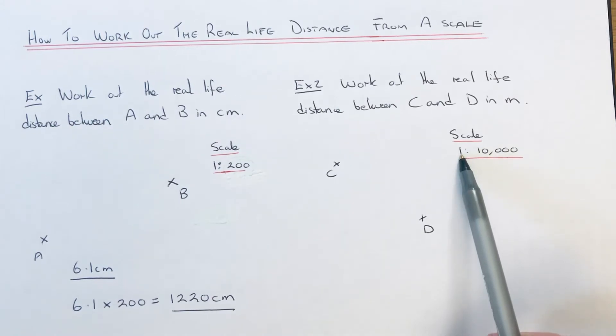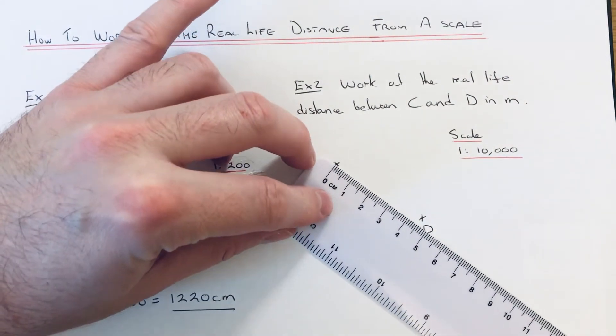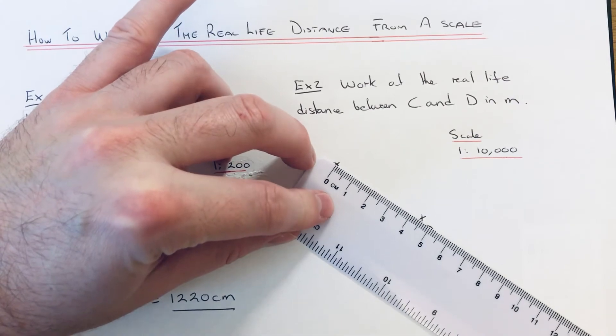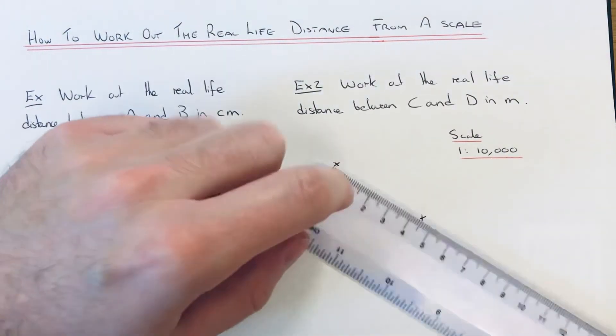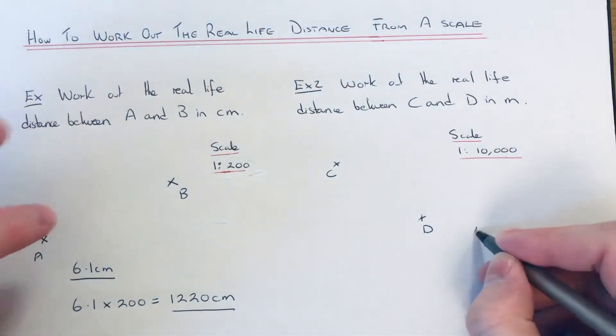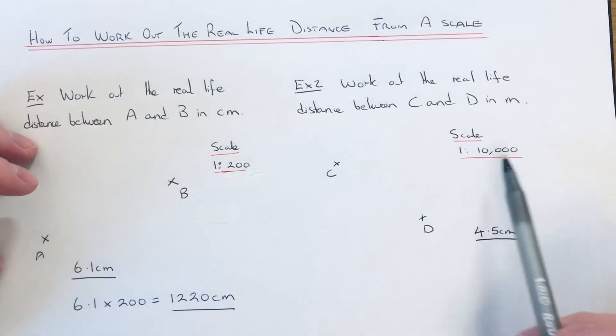So that means one unit on the map is 10,000 units in real life. Again, I'm going to measure the distance between C and D in centimeters, so the distance on our map is 4.5.